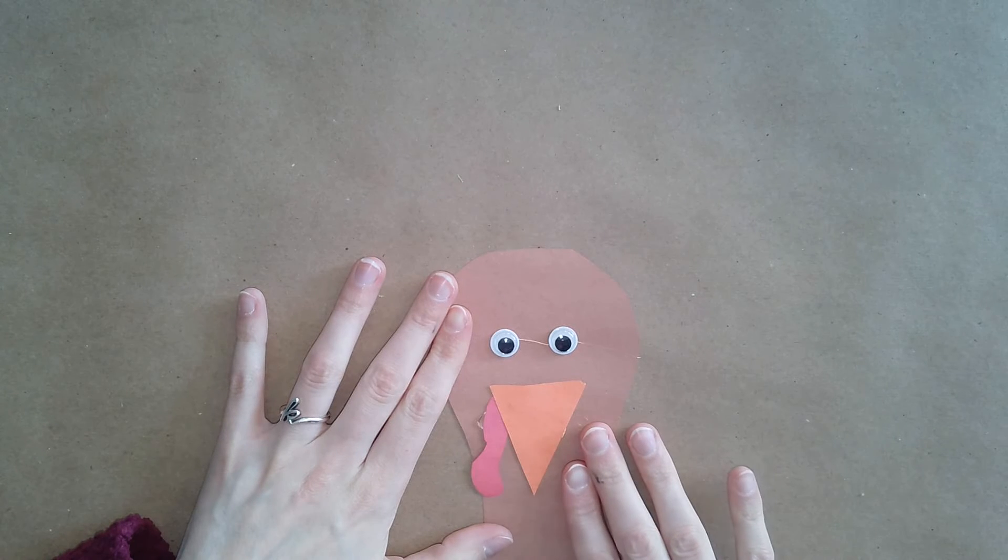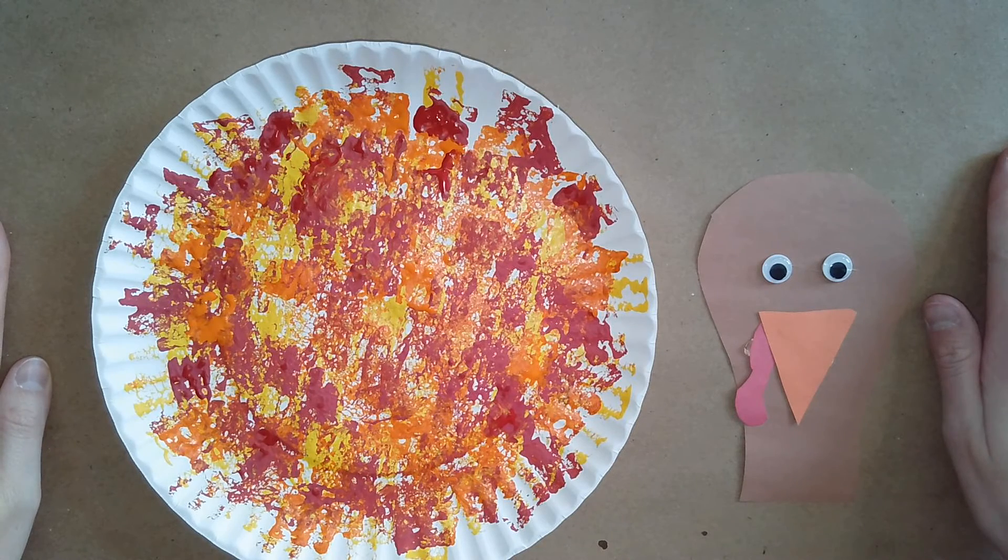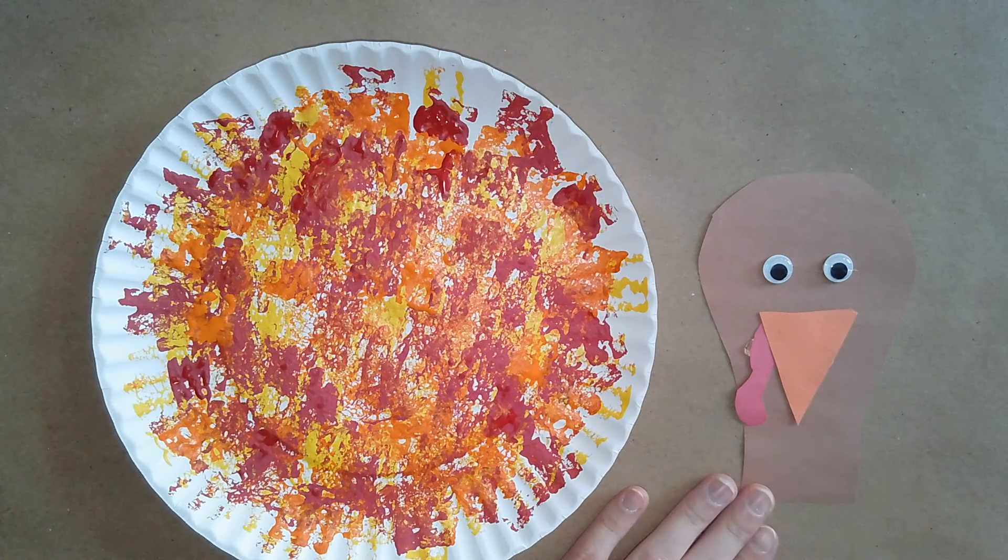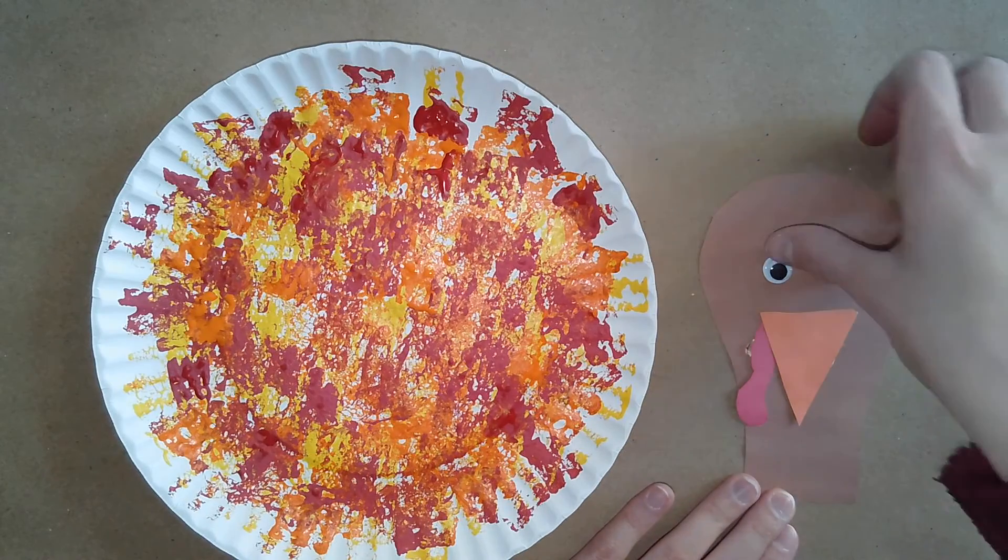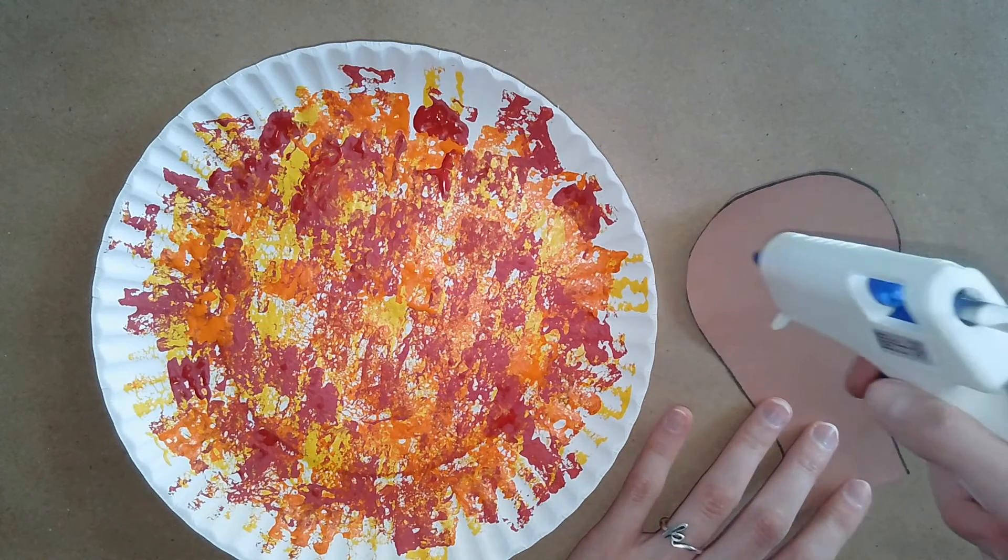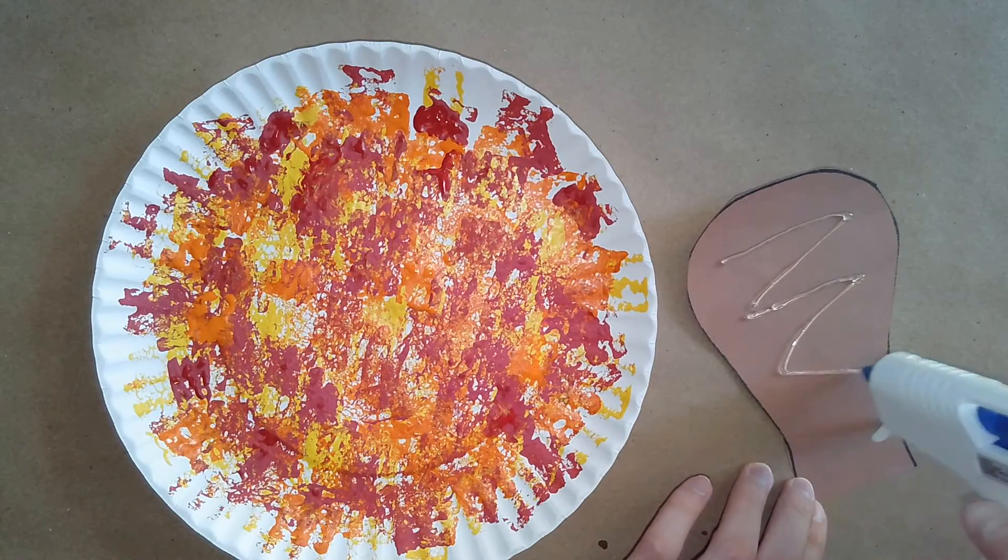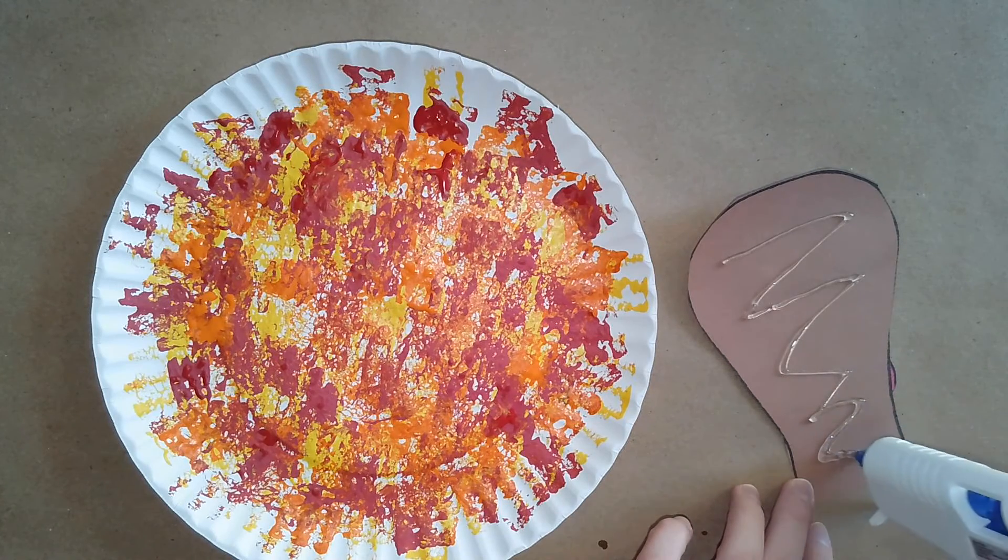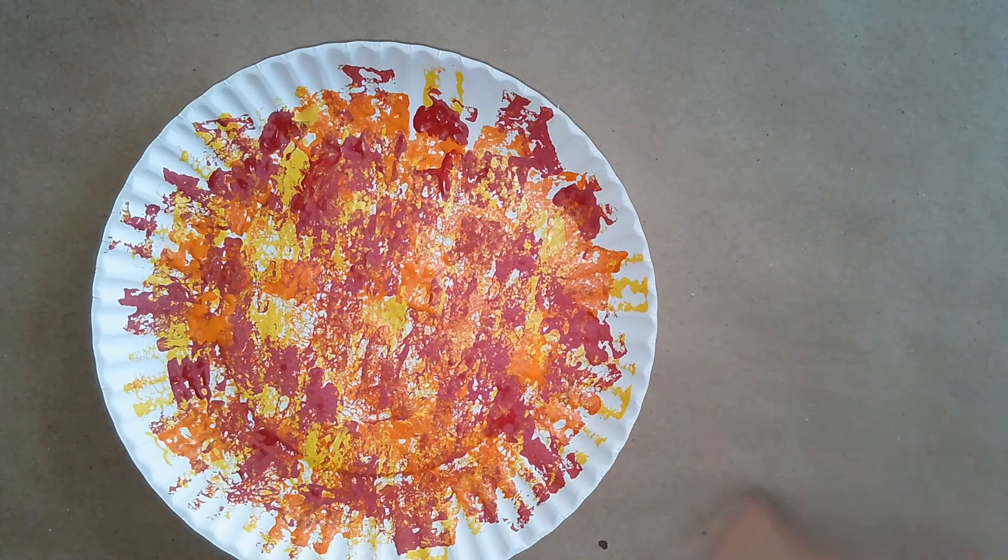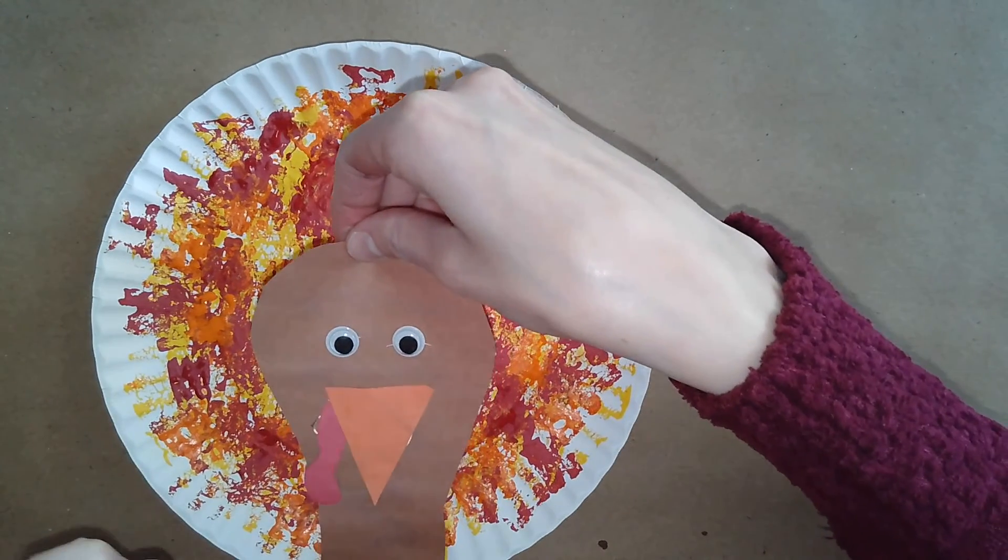Once the plate is dry, you can glue this to the plate. Now, once all the paint on your paper plate has dried, you can add your turkey face to it. I'm going to flip this over, put some glue on it. And then you can place the turkey at the bottom of the plate.